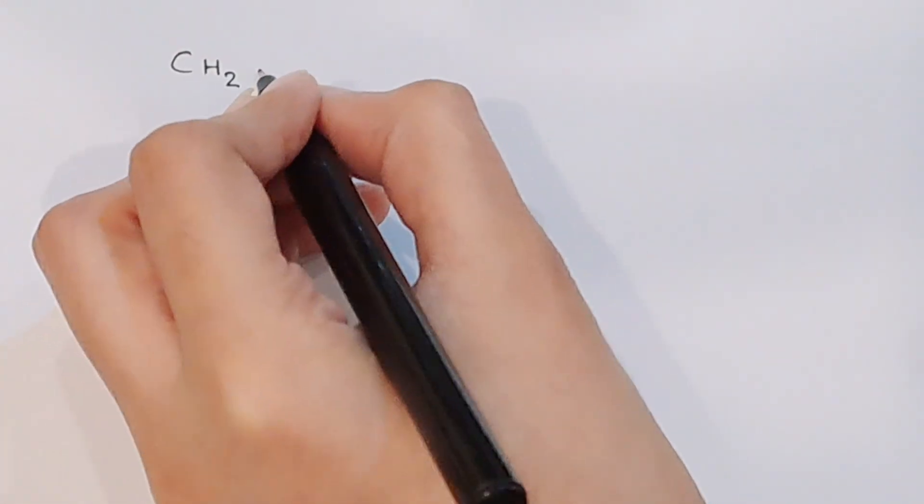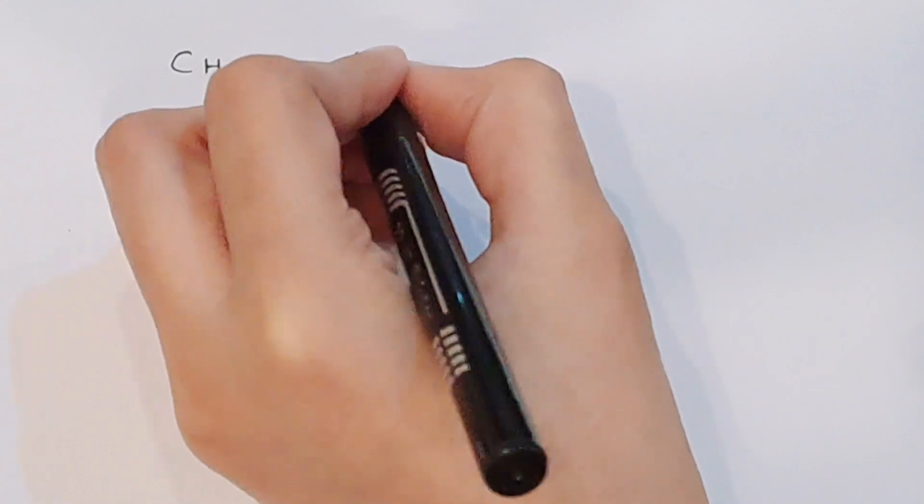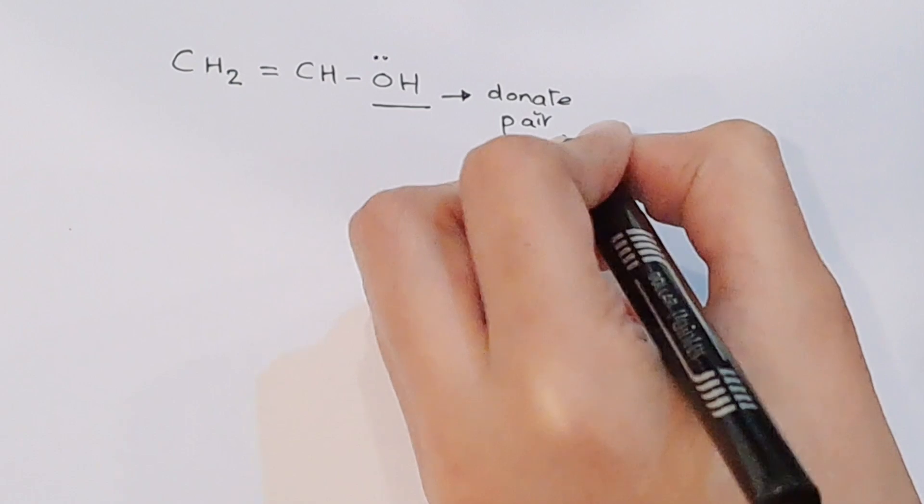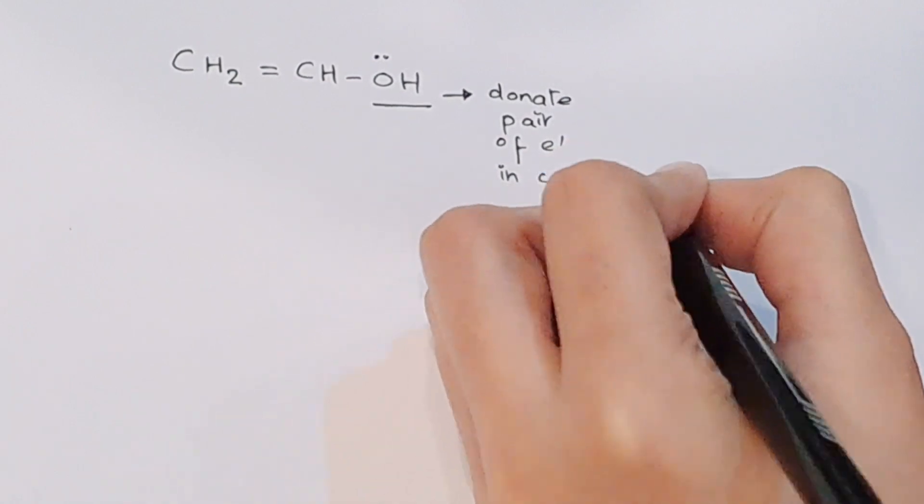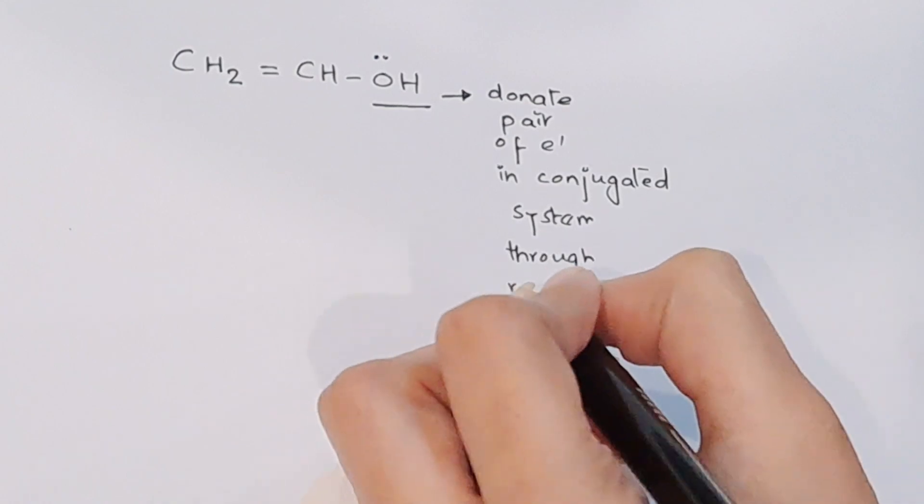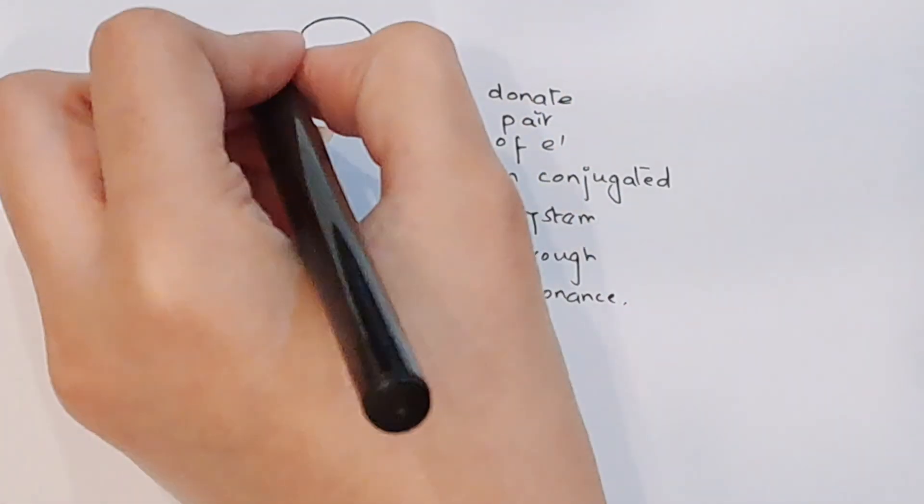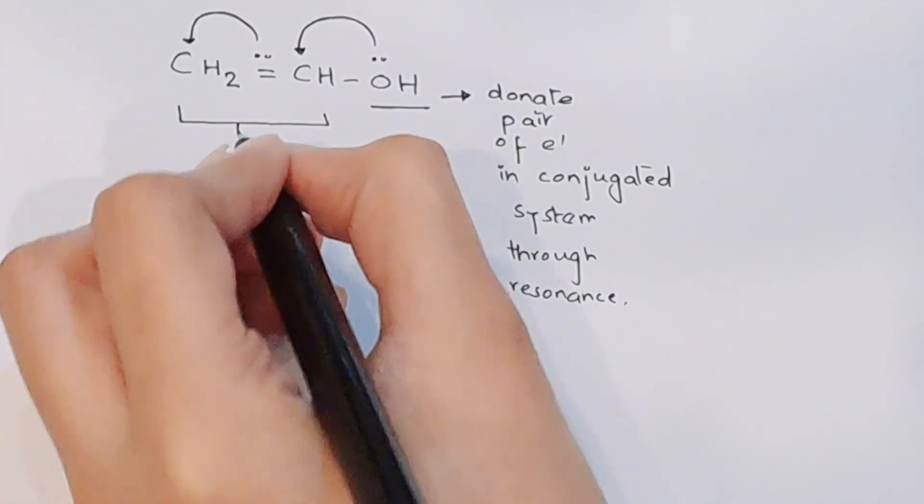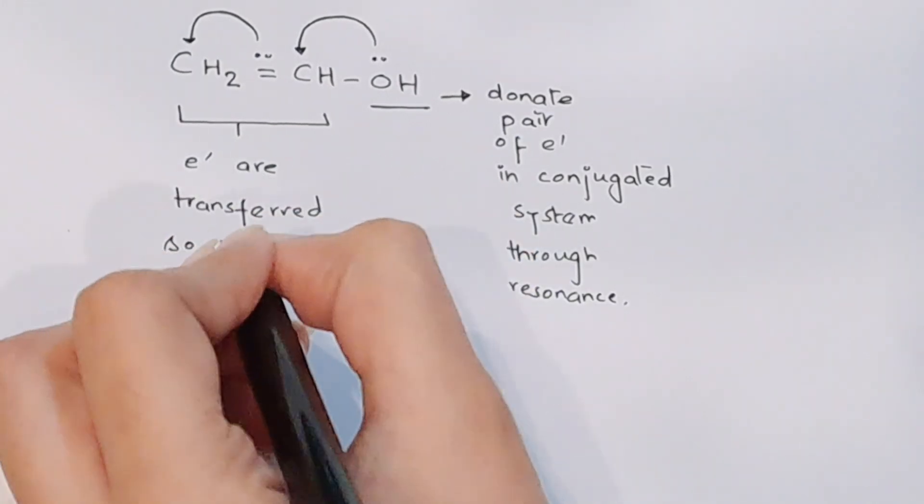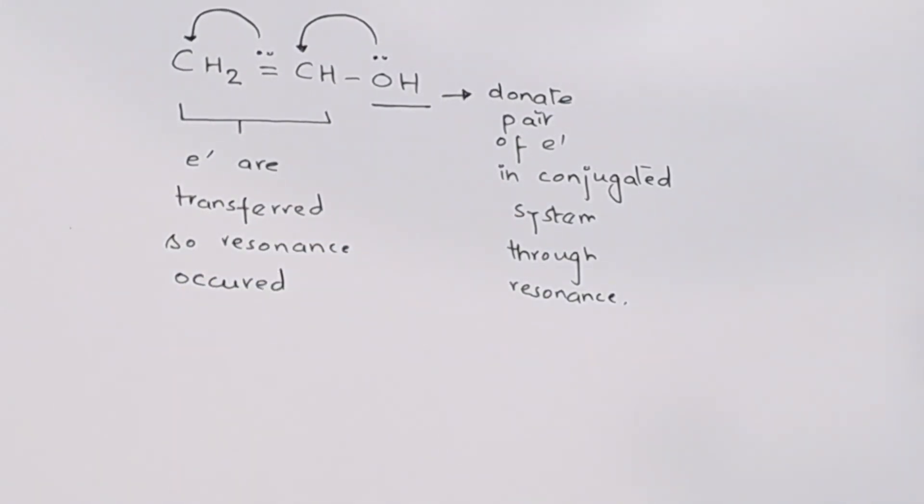We can take a compound in which we have a hydroxyl group. The hydroxyl group donates a pair of electrons in the conjugated system through resonance. This lone pair of electrons is shifted to the next carbon. As you can see in the video, this lone pair is shifted to this carbon and these pi electrons are shifted to the next carbon.